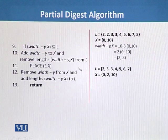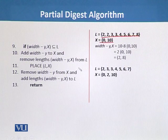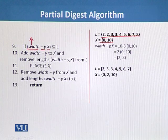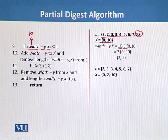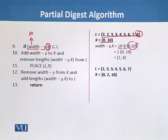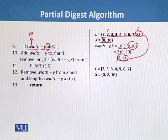Here we can see L and X is {0, 10}. Now we calculate width minus Y with X: width is 10, Y is 8. So we compute 10 minus 8 equals 2, and with X = {0, 10} we get the values {2, 8}. Both 2 and 8 are present in L, so {2, 8} is a subset of L.